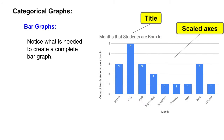Another thing that we need is a scaled axis. If you look over on this side, you can see that it's counting 0, 1, 2, 3, 4, 5. We want that scale to be consistent.